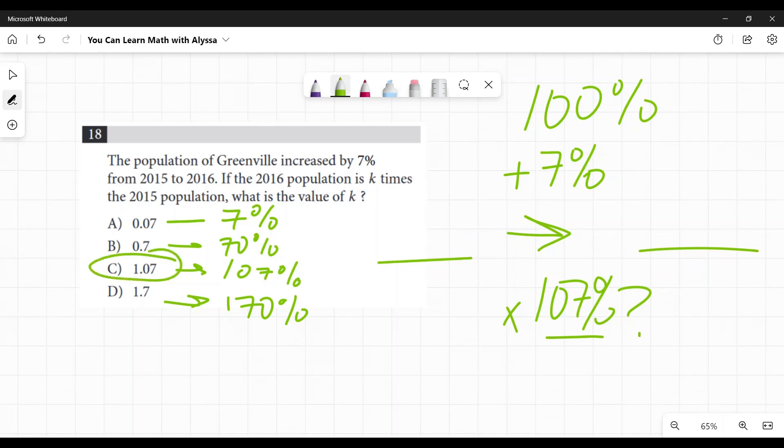So there's several ways you can look at that. You can just take this knowledge of saying, if I want to get a number and increase it by 7%, I'm actually needing to multiply by 107%. You can, if you're looking at this, immediately go 70% and 170%. Those are out.